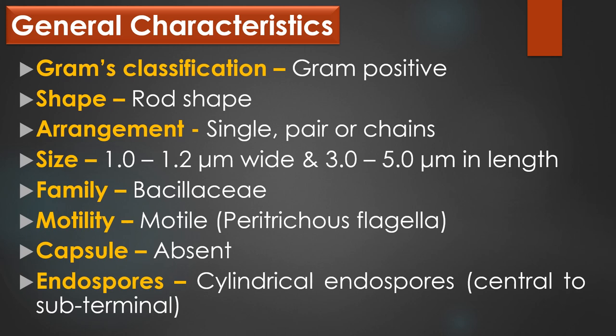Bacillus thuringiensis, in short form, is called as Bt and it is a gram-positive rod-shaped bacteria. In arrangement, it is arranged as single, pair or chains. Its size measures 1 to 1.2 micrometer wide and 3 to 5 micrometer in length. It belongs to the family Bacillaceae and it is motile due to the presence of peritrichous flagella. Capsules are absent and endospores are present.